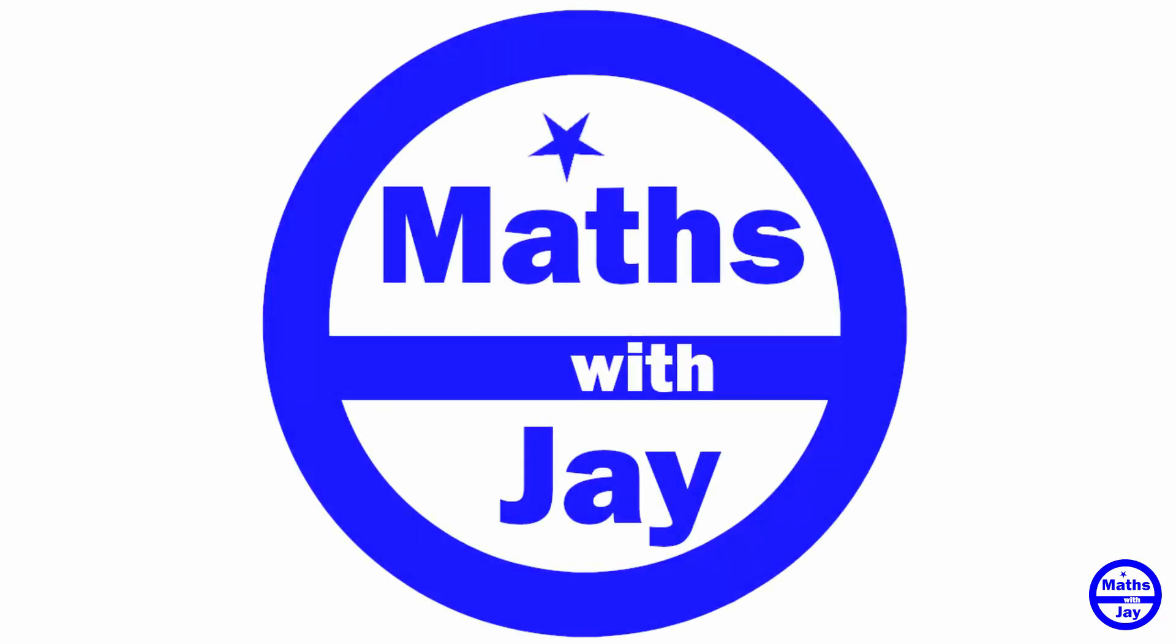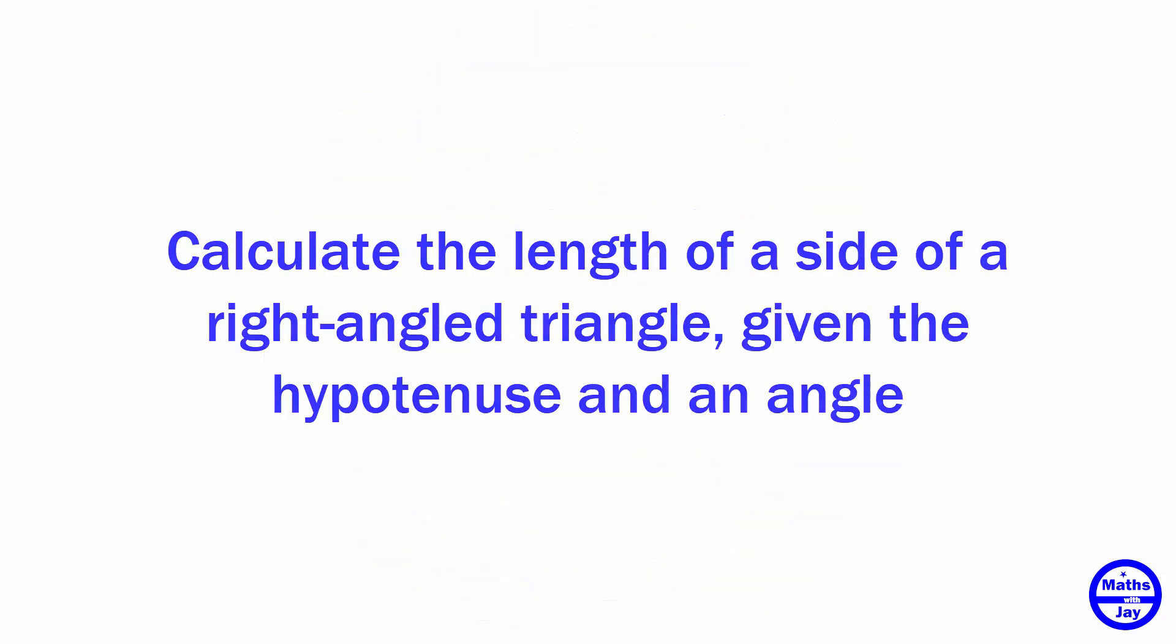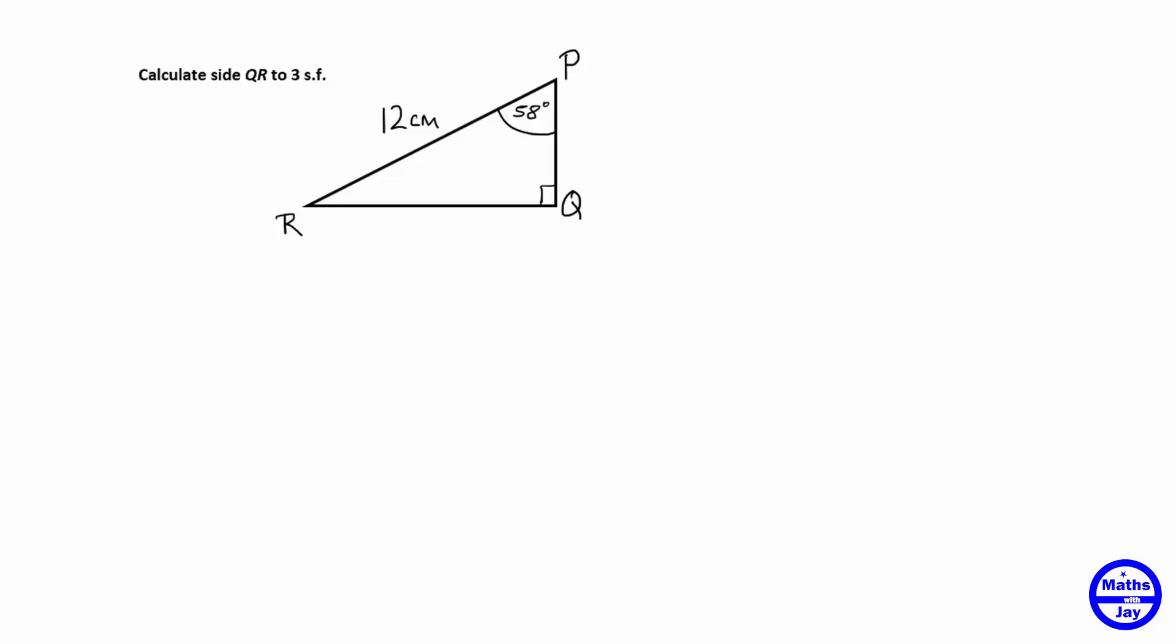Hello! Welcome to Maths with Jay. So we can see we've got a right-angled triangle here. The symbol at Q shows us that. And we've been given one side and an angle and we want to find one of the other sides.